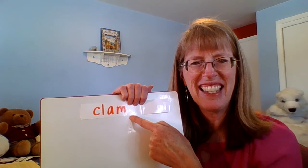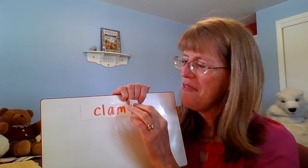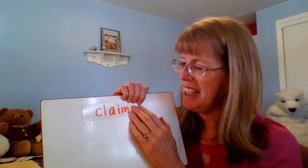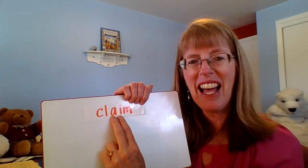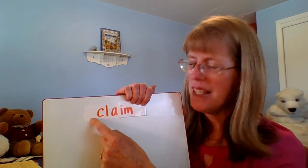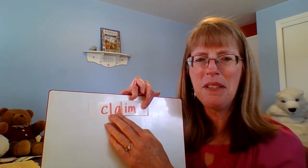Clam. That would be a shell, not a fish, an animal that you would find in the ocean. A clam. Now we have an A-I. So the vowel sound changes to A, and the word becomes claim. From clam to claim. Next one.